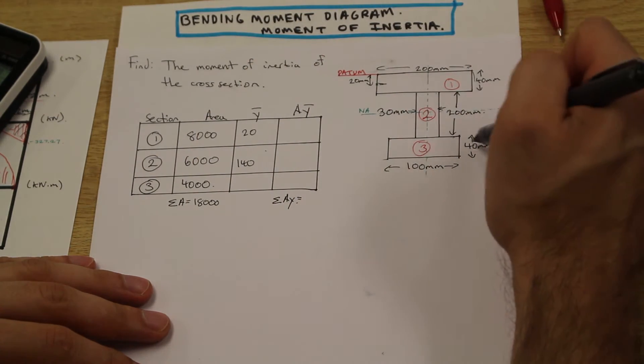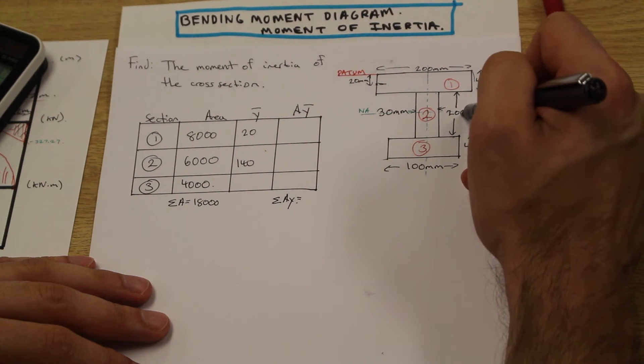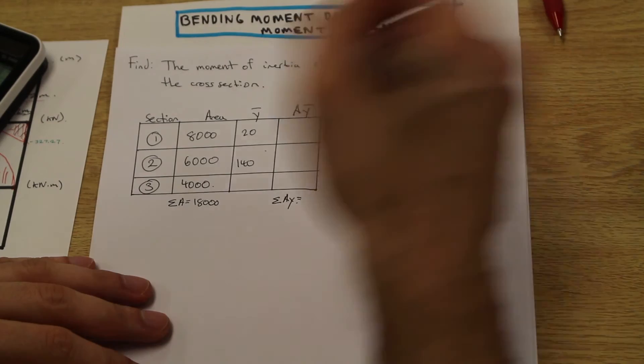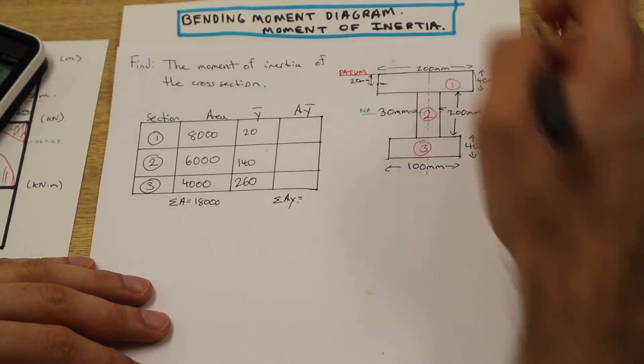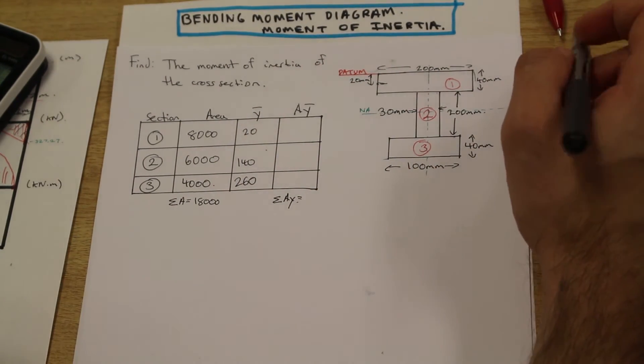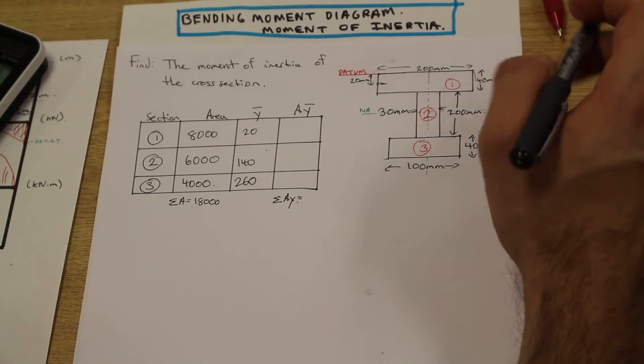Then for section 3, the centroid of this shape alone is 20; however, we're going to need to add this 200 and the 40 to that, giving us 260. That was pretty straightforward. Now all that's left is just to multiply the area and the Y bars together.